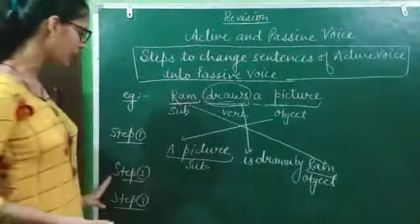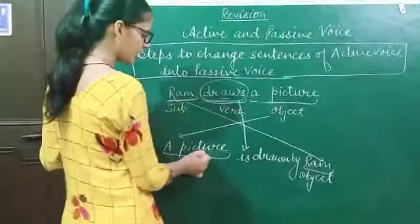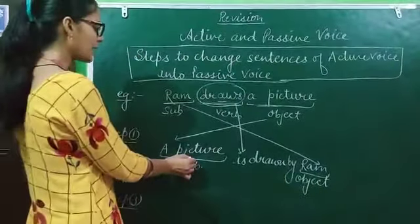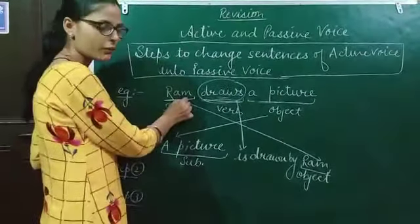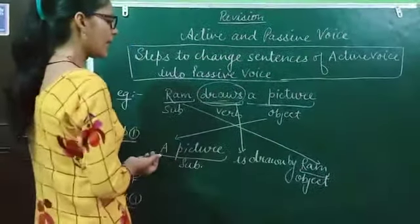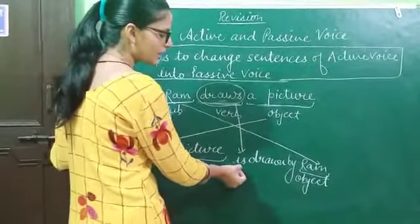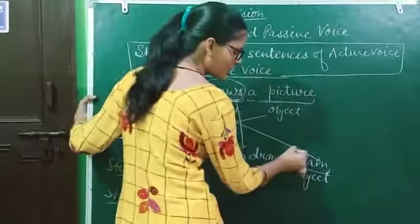So we have three main steps. First step, we will change the object into the subject. In second step, we will make the subject of active voice into the object of passive voice. And in third step, we will change the verb according to the tense by using the preposition 'by'.